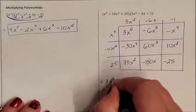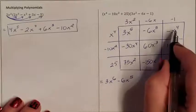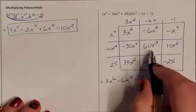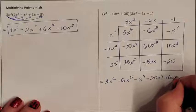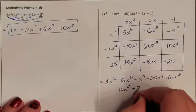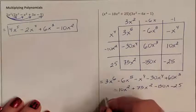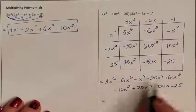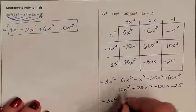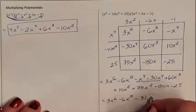So we had 3x to the sixth. There is no other fifth-degree term, so negative 6x to the fifth. Fourth-degree terms go with fourth: negative x to the fourth minus 30x to the fourth. There is only one third-degree term: plus 60x to the third. Seconds go with seconds: plus 10x squared plus 75x squared. x's go with x's and constants with constants. I count 9 terms total — and there were 9, so I have them all. So: 3x to the sixth, negative 6x to the fifth, and fourths combine to minus 31x to the fourth.